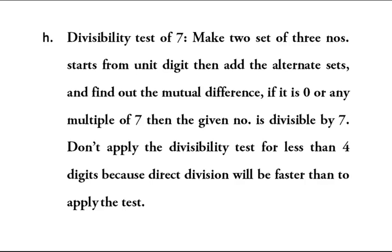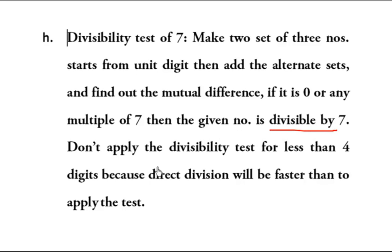Let's see the divisibility test of 7. In this case, we have to make two sets of three numbers starting from the unit digit, then add the alternate sets and find out the mutual difference. If it is 0 or any multiple of 7, then the given number is divisible by 7.